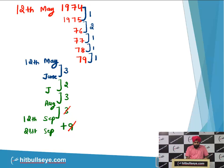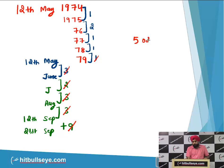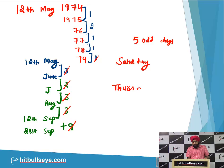Count total odd days and cancel multiples of 7: 1+2+1+1 from years = 5, plus 3+3+3 from months = 9, plus 9 days = 23 total. Cancelling: 9 and 14 go, leaving 1+2+1+1 = 5 odd days. Adding these 5 odd days to Saturday: Saturday plus 5 gives Thursday. So Thursday is your answer.